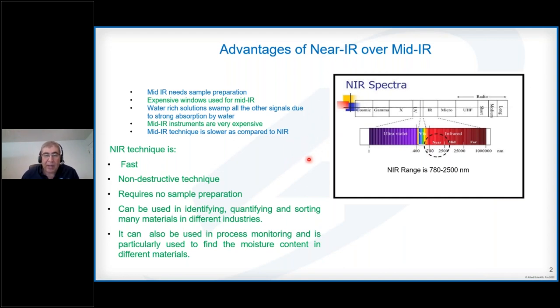Before we get into the DLP Spectre Photometers, I want to talk about a comparison between near IR and mid IR. You can see the near IR region here in the 780 to 2500 nanometer range. When you work in the mid-infrared, there are certain limitations. For example, the equipment is expensive, the samples need to be prepared beforehand, water absorption swamps a lot of signals so watery samples are hard to measure, and it's a slow process.